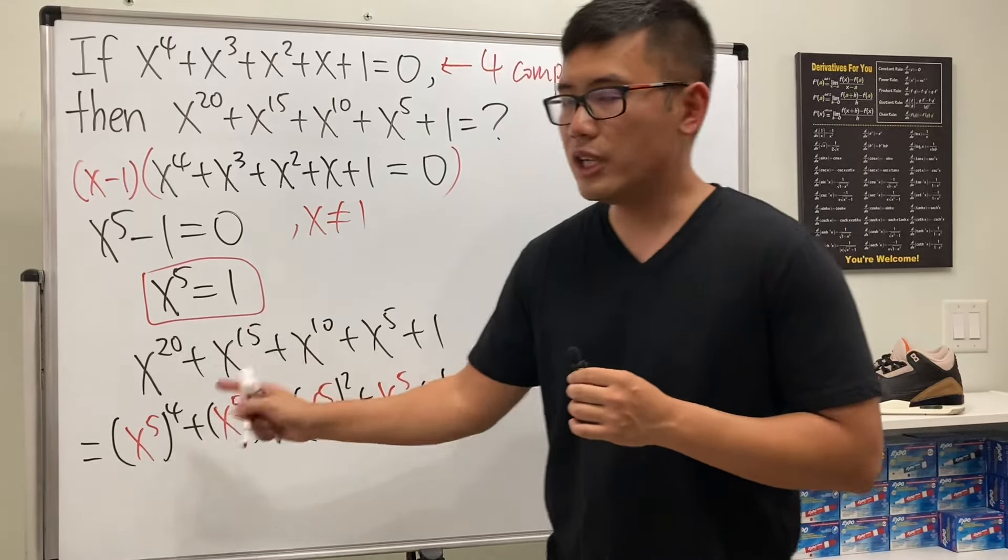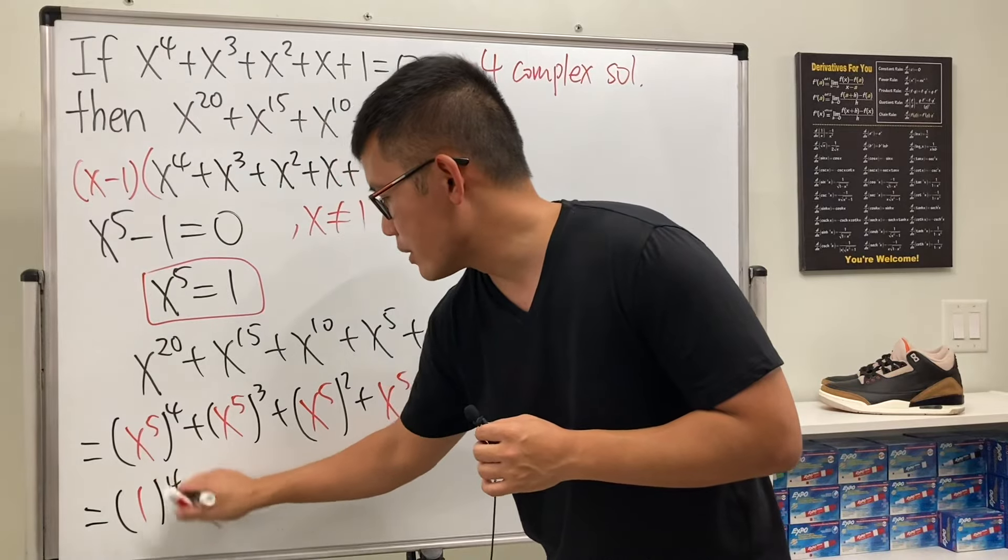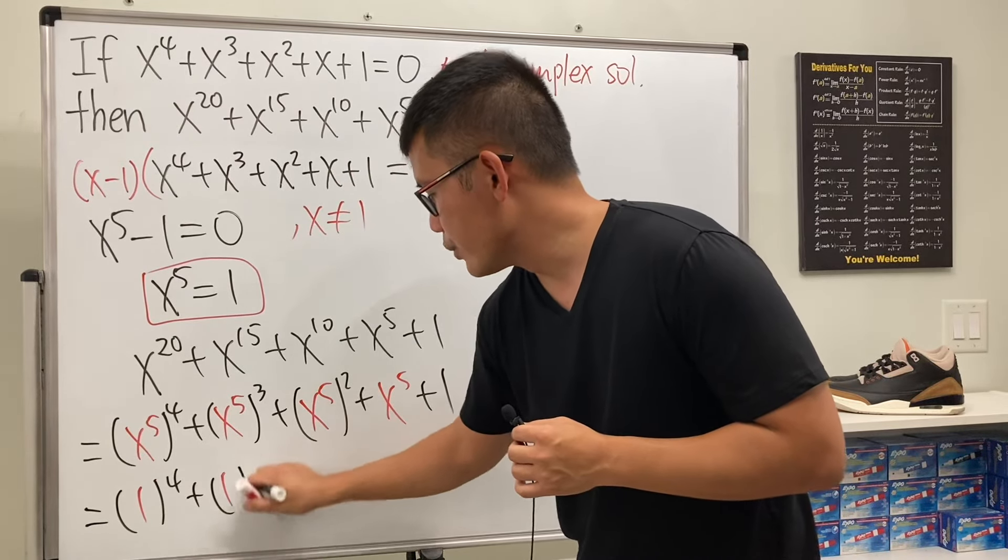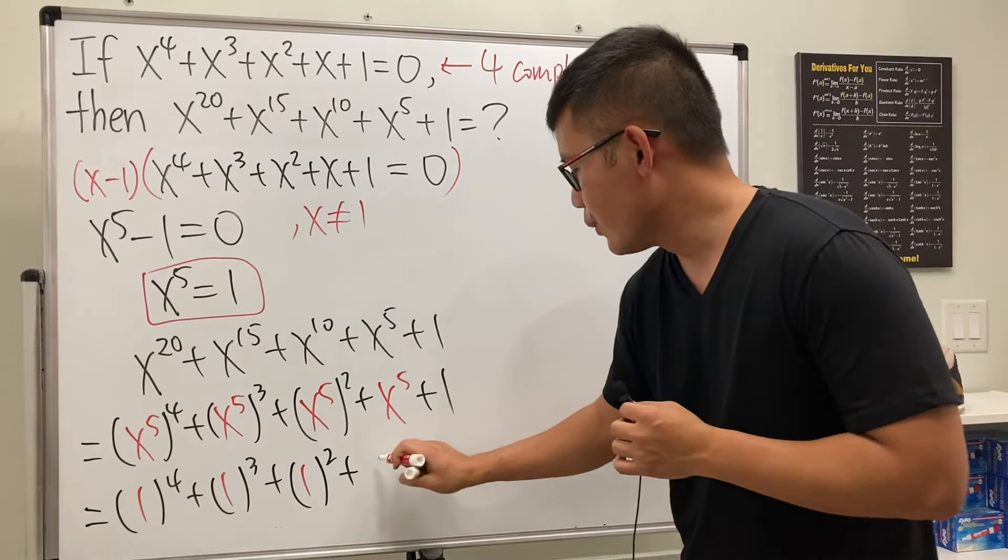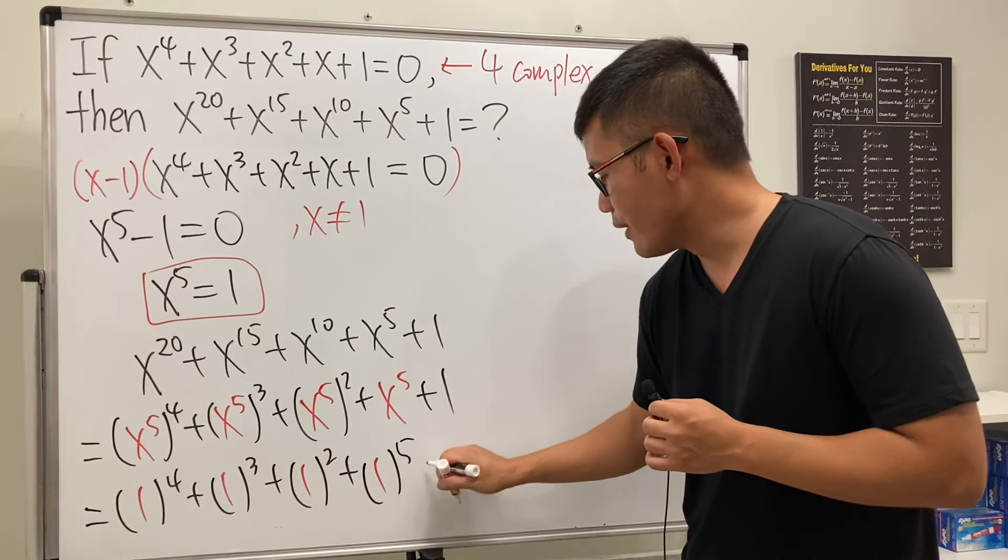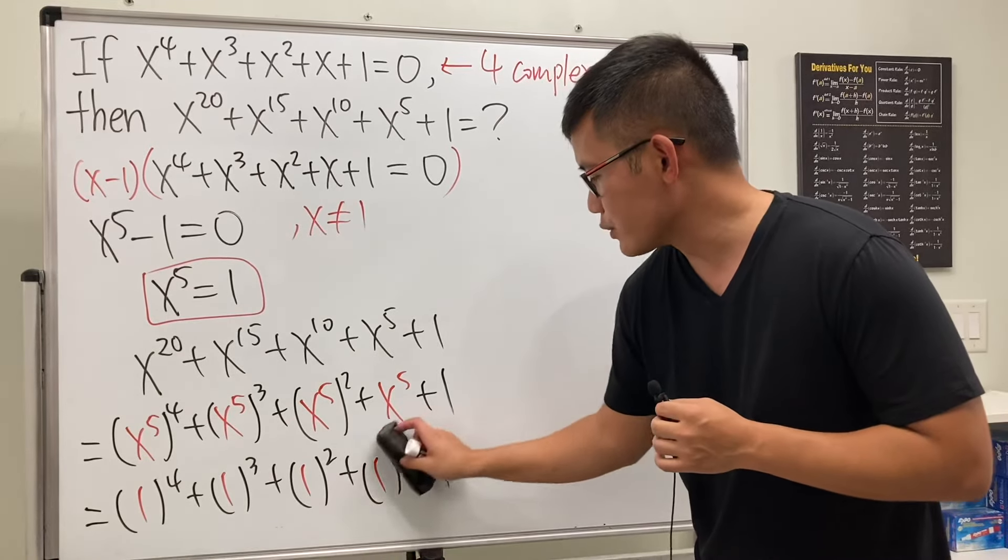Guess what? This right here, I can legitimately put in one: 1^4, then 1^3, then 1^2, and then—no, sorry, this is just one because x^5 = 1.